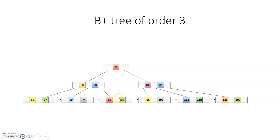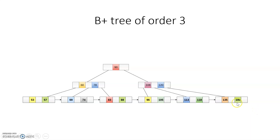In a B+ tree of order 3, the rules for internal nodes are the same as those of the B tree, whereas the rules for leaf nodes are slightly different. All internal nodes including the root node follow the same rules as B tree. However, the structure of the internal nodes and the structure of the leaf nodes are different from each other.